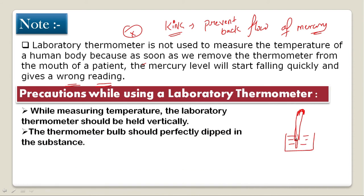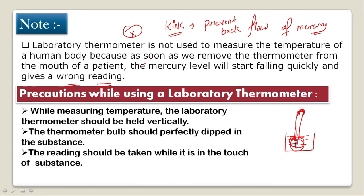The next precaution is that the thermometer bulb should be perfectly dipped in the liquid. It should be totally and completely in contact with the substance being measured. The reading should be taken while the bulb is in touch with the substance. We should be placed in the correct horizontal line of sight and then take the reading.